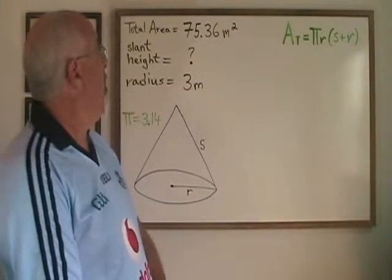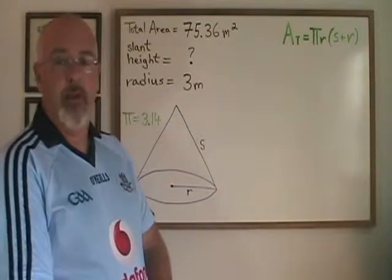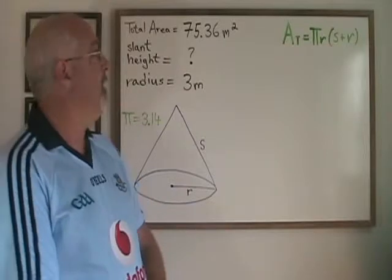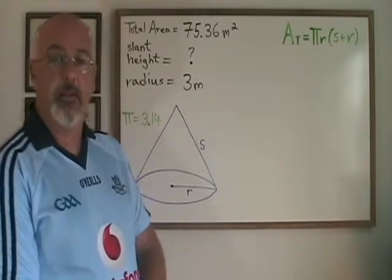Here's an example where we are given the total area and the radius but we are asked for the slant height. Again we are just plugging the values we have into the formula and simplifying.